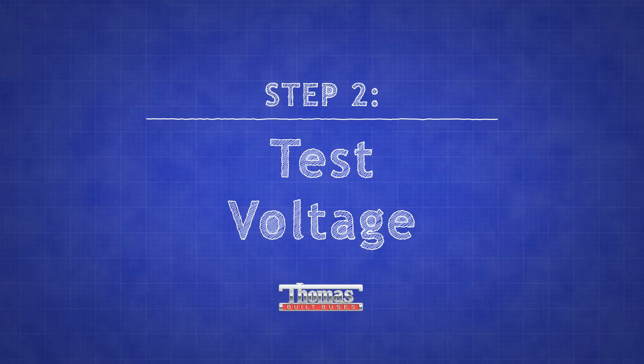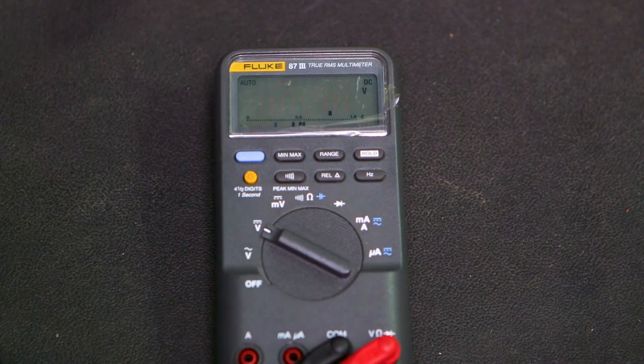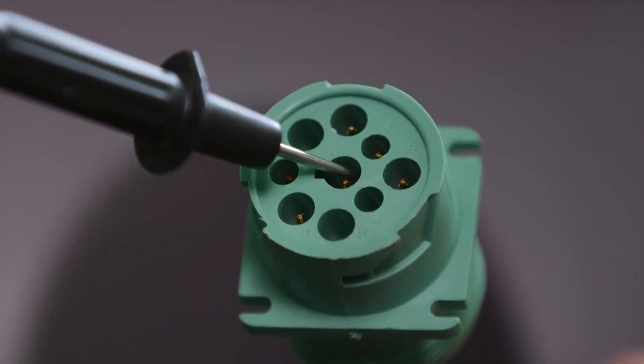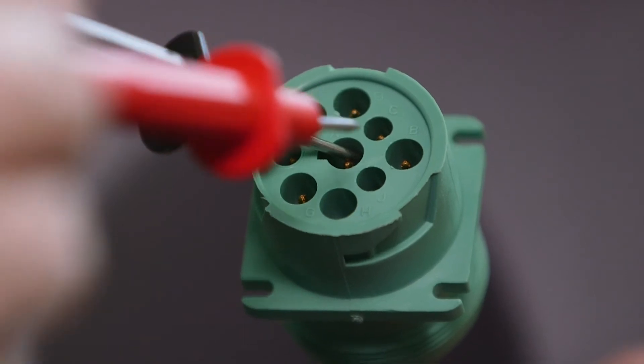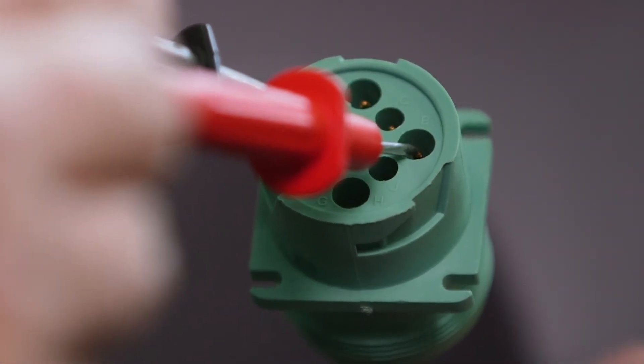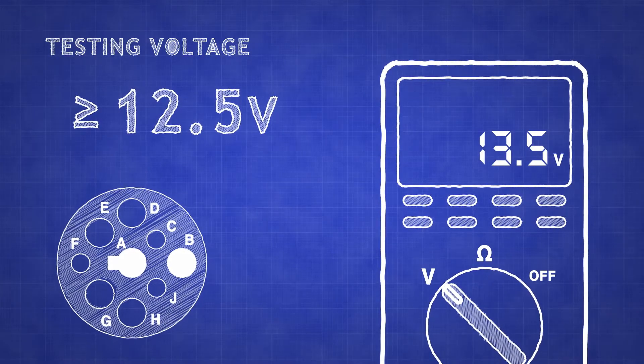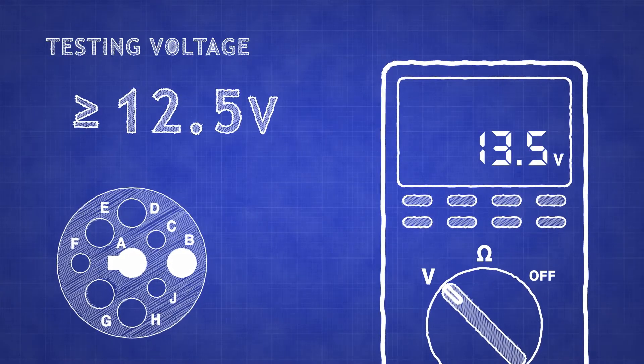To test the voltage, begin by switching your multimeter to the DC voltage section. Insert the negative or black probe into pin A of the diagnostic connector for a ground. Insert the positive or red probe into pin B. This will show the current battery voltage, and it should be 12.5 volts or higher in order to continue.